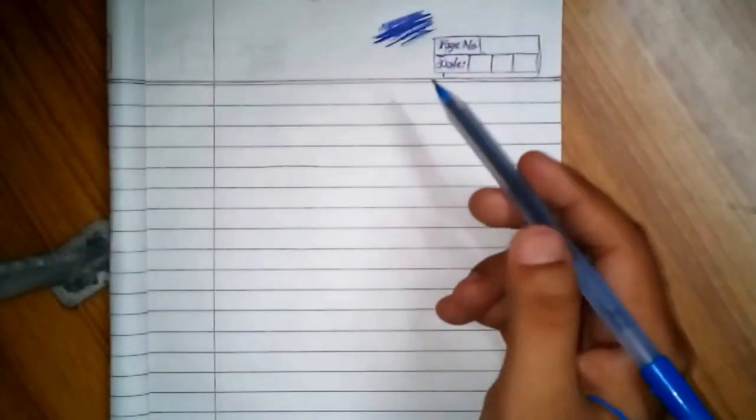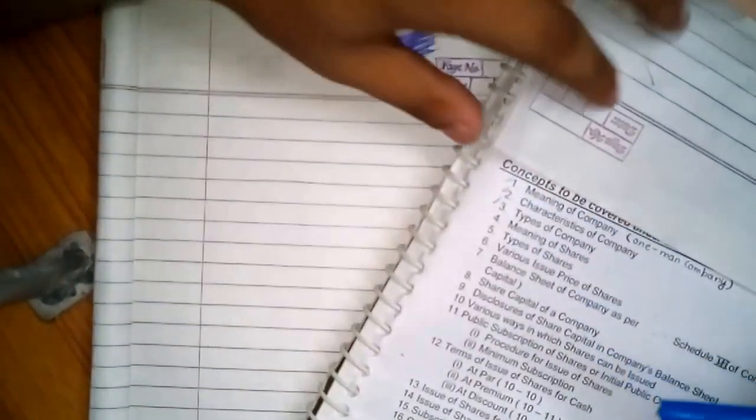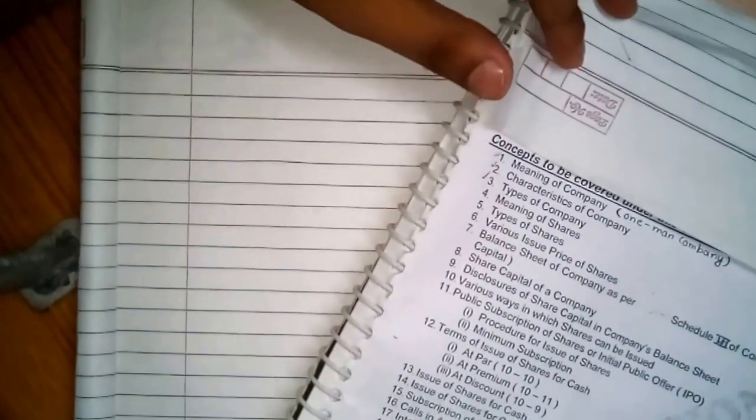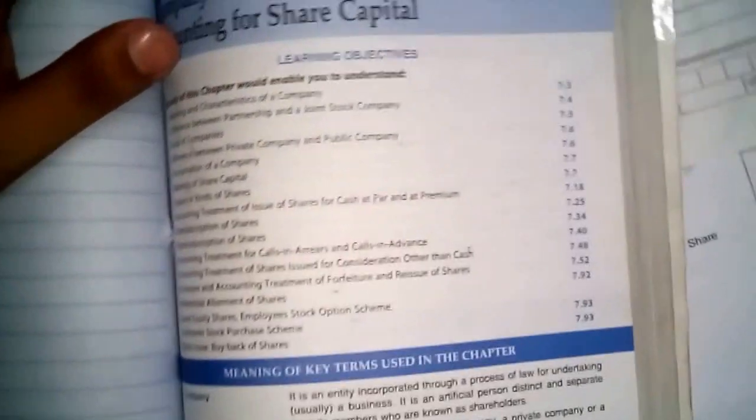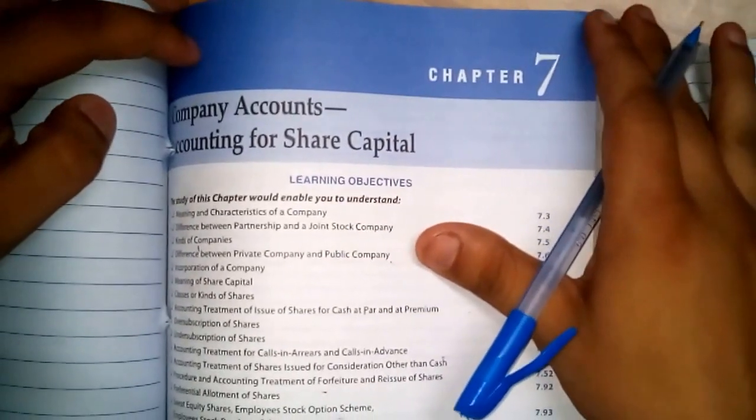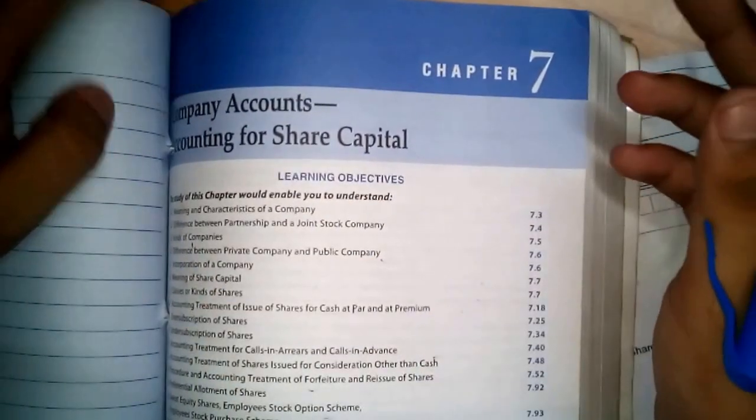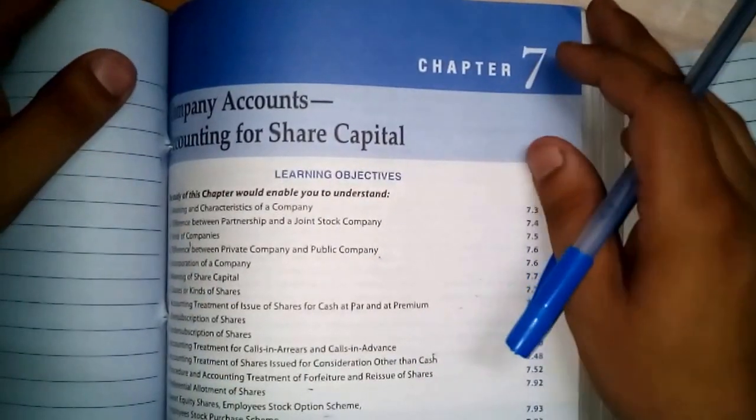Hello students, welcome back to accounting class. In the previous class we learned about three topics of companies. The book name is TS Garewal, available in the market as Company Accounts: Accounting for Share Capital. This is the chapter we are studying.